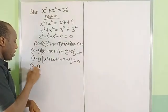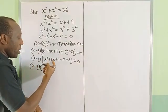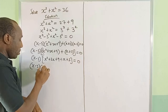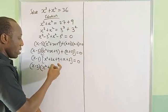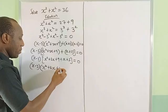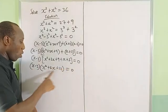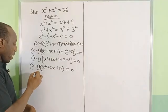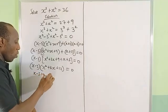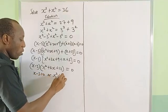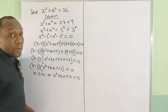That will be (x - 3), and then 3x + x is 4x, that's plus 4x, 9 + 3 is equal to 12. So this is equal to 0 or this is equal to 0. So x - 3 = 0 or x² + 4x + 12 = 0.